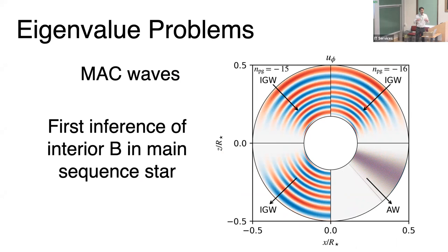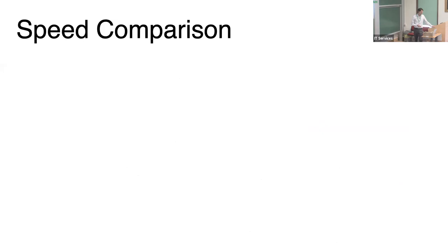Dedalus can also solve eigenvalue problems. I solved for properties of MAC waves in the radiative zone of a massive star. By examining MAC wave properties at different frequencies I inferred the magnetic field in the near-core region of the B star HD 43317 — approximately 500 kilogauss — which matches what you get from dynamo simulations of the core.